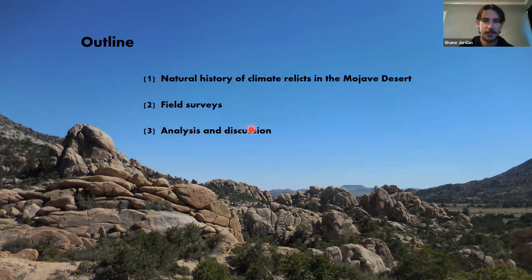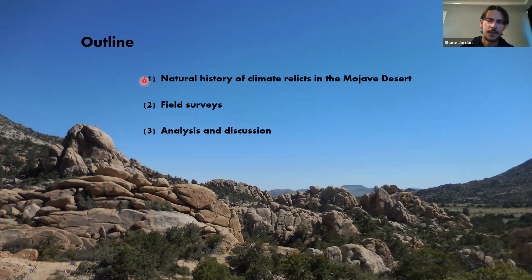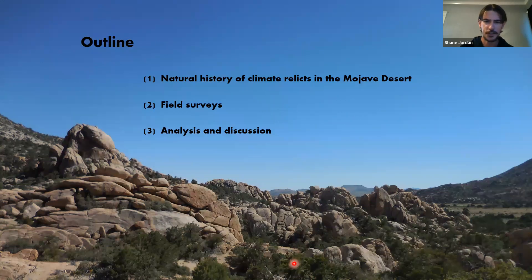Here's a brief outline of the talk, broken into three parts. First, I'll talk about the natural history of climate relics in the Mojave Desert. Then I'll discuss the field surveys I've done and some of the interesting plants I found. Finally, I'll close with an analysis and discussion of the implications of some of the findings.